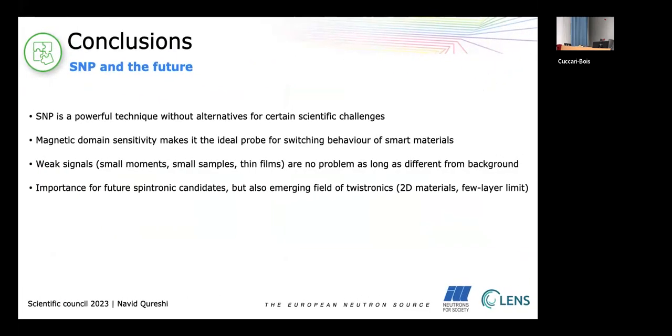So that brings me to the conclusions. I hope I could show you that SNP is a powerful technique with sometimes no alternatives for certain scientific challenges. The sensitivity to magnetic domains makes it the ideal probe to study the switching behavior of smart materials and it's still possible to measure very weak signals as long as they're different from the background, which is important for weak magnetic moments, small samples, but especially thin films. So SNP, especially on the instrument D3, is important for future spintronic candidates but it would also be interesting to see how it can be useful to study twistronics which is an emerging field where you have 2D materials which are stacked on each other and by twisting them you can influence their properties, especially the magnetic structures. So that's some exciting work which can be done in the future.